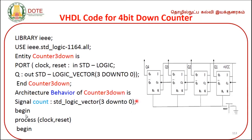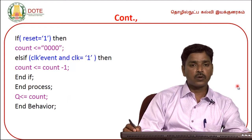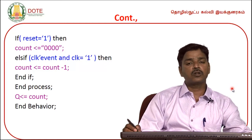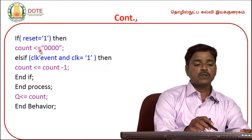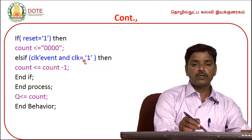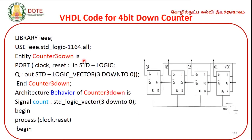The main output statement begins with 'begin', then 'process'. The sensitivity list includes clock and reset: process(clock, reset). Then 'begin'. If reset equals 1, the count output is assigned 0, meaning the normal output is 0.